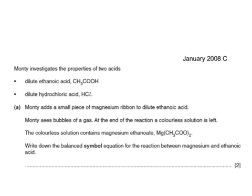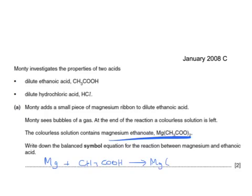Monty investigates the properties of dilute ethanoic and dilute hydrochloric acids, adding a small piece of magnesium ribbon to ethanoic acid. There are bubbles of hydrogen gas, and a colourless solution of magnesium ethanoate is left at the end. Writing the balanced symbol equation: on the left-hand side we have magnesium and ethanoic acid; on the right-hand side, magnesium ethanoate and hydrogen. We need two ethanoic acid molecules on the left to balance the two ethanoate groups on the right.